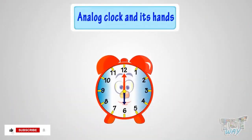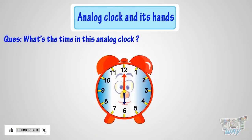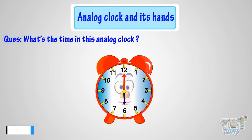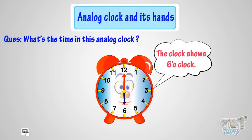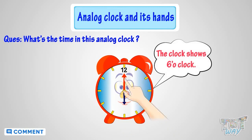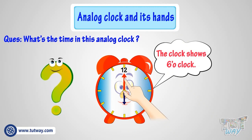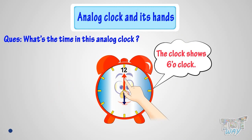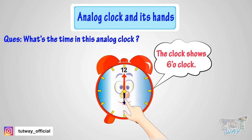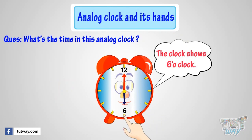Can you tell me what's the time in this analog clock? Let me help you do that. The clock shows 6 o'clock. When the minute hand is at 12, it is time to the hour. But to which hour? The hour hand tells the hour. As the hour hand is pointing at 6, it's 6 o'clock.